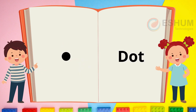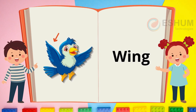Dot. The black circle is a dot. A dot is a very small round mark. Do you put a dot after you write a sentence? Wing. In the picture an arrow is pointing to a wing. It helps the bird fly, but some birds can't fly even if they have wings — what are they?